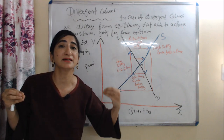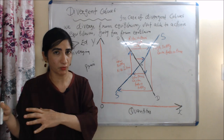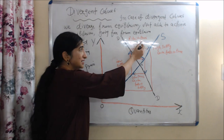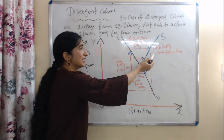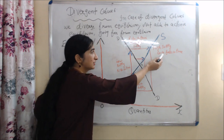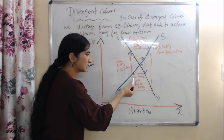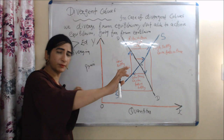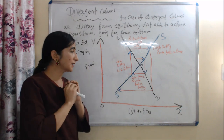We understand this with the help of a diagram. All processes will remain the same as we discussed in continuous cobweb: a rise in price will cause high supply, high supply will cause a fall in price, and low price will cause a fall in supply.